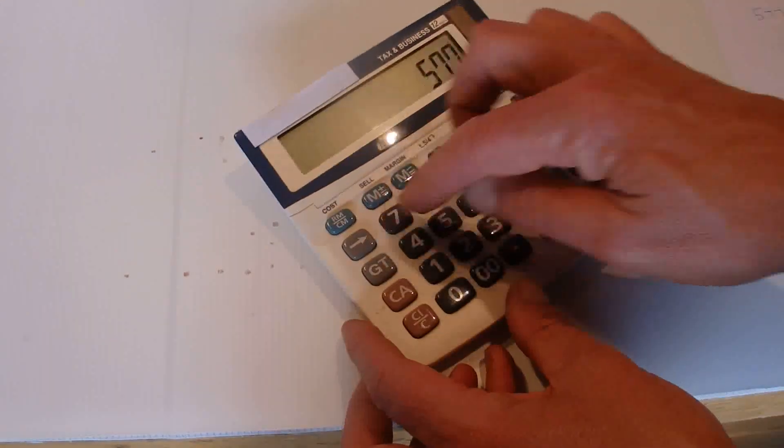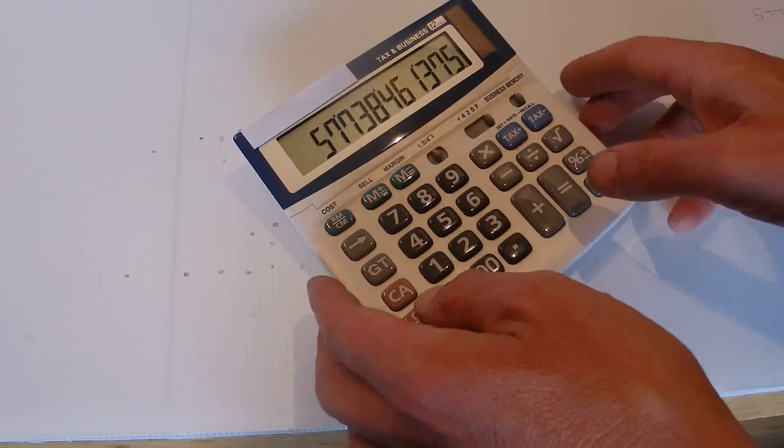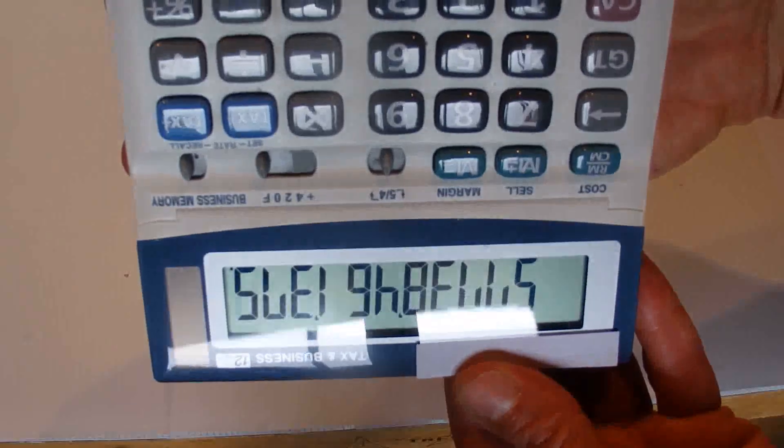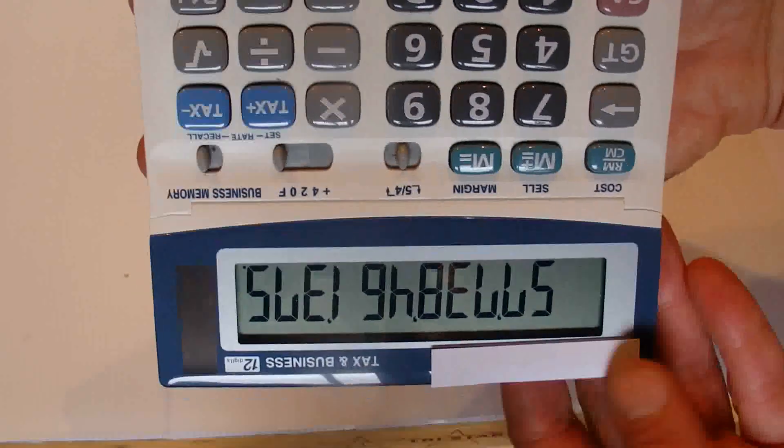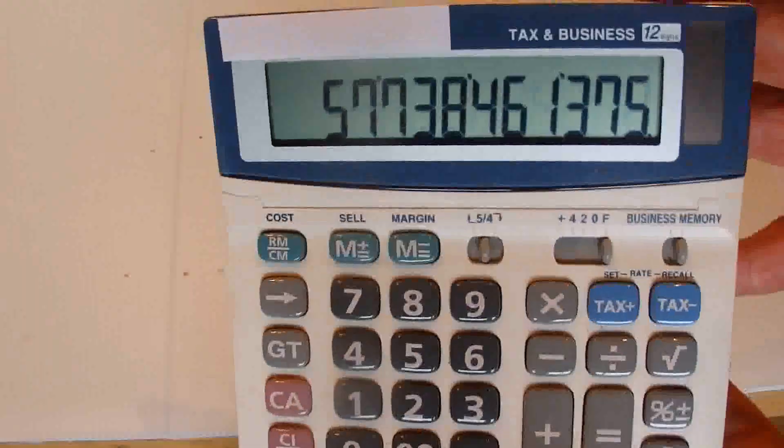And the second one is 5-7-7-3-8-4-6-1-3-7-5. Spin that round and that gives you sleigh bells. So we've got two words, both 11 letters long, and I believe they're the longest words that you can make on a calculator.